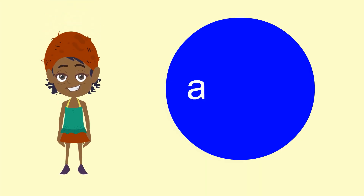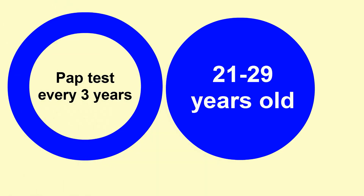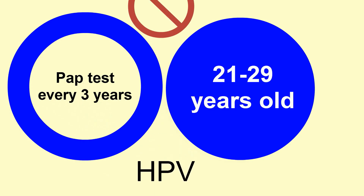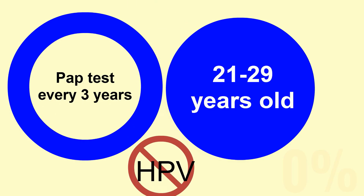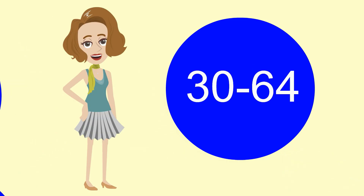The screening recommendations differ by age. Screening should start at age 21. For women between 21 and 29 years old, PAP tests alone should be performed every three years. HPV testing is not performed in this age group, as HPV prevalence approaches 20% for teens and women in their early 20s.